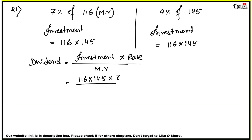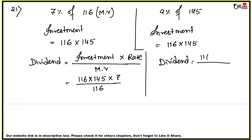For the second case, the dividend formula uses the same investment of 116 × 145, but here rate is 9 and MV is 145.